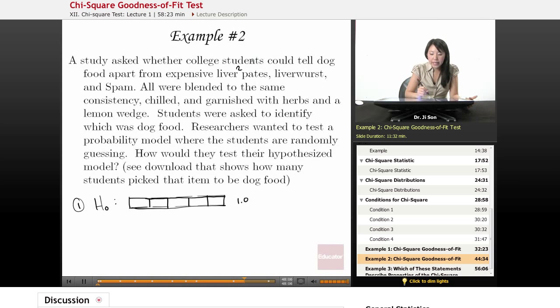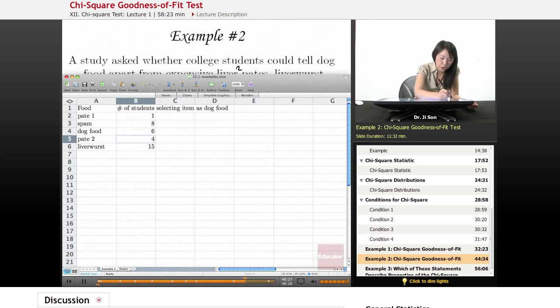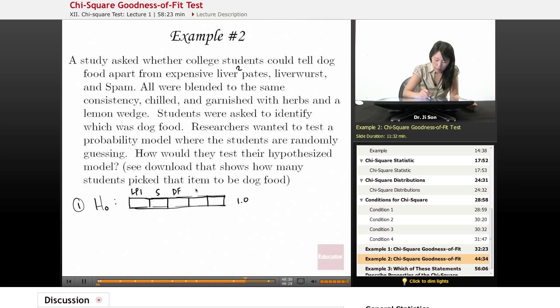So liver pate 1, I think spam was next, and then actual dog food. What was the... oh, pate 2, and then liverwurst. So I'll say pate 2, and then liverwurst. All right, so these are the five choices, and we're saying, look, the students are just guessing. They should have a 20% probability of each.